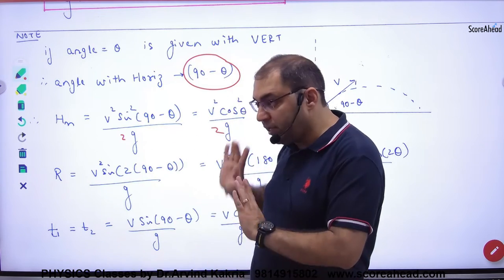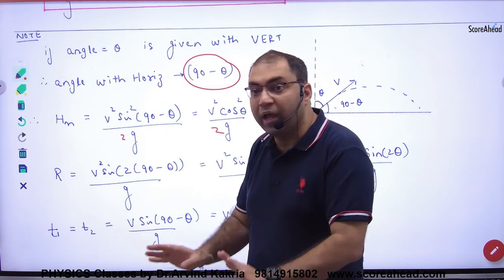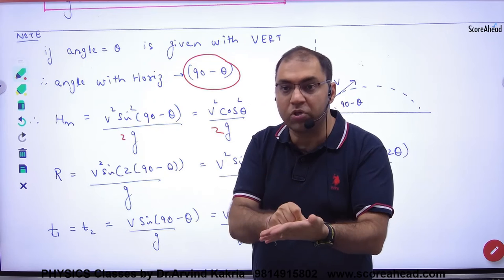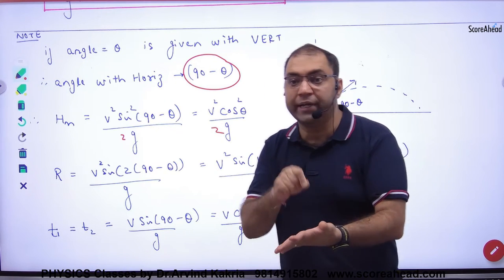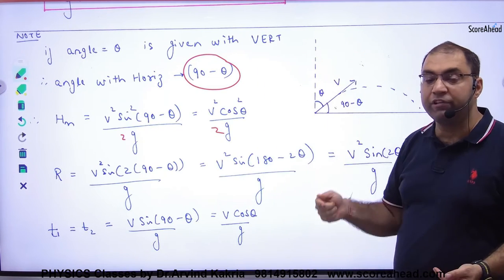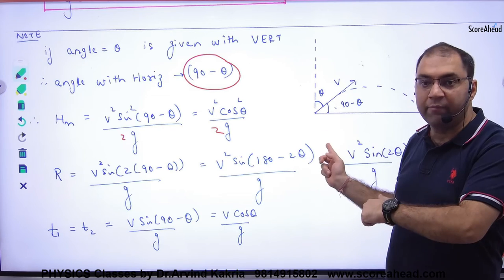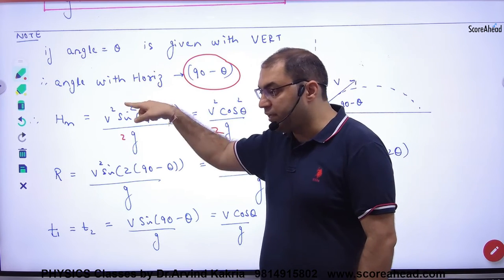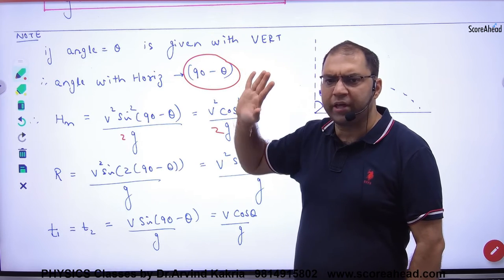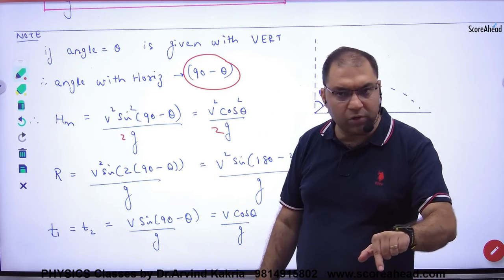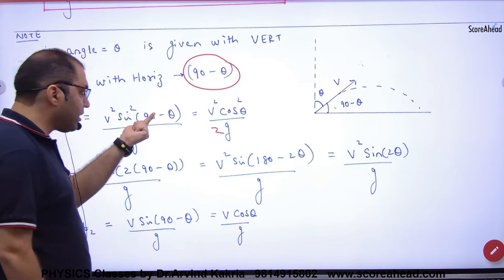You have to read with attention. So what do you have to do? You have to do all the derivation. No change. In the end, in this question, it is given that angle theta is with vertical. So the angle with horizontal will become 90 minus theta. So we will replace theta with 90 minus theta. So what is the derivation change? Do the derivation. In the end, theta is 90 minus theta.